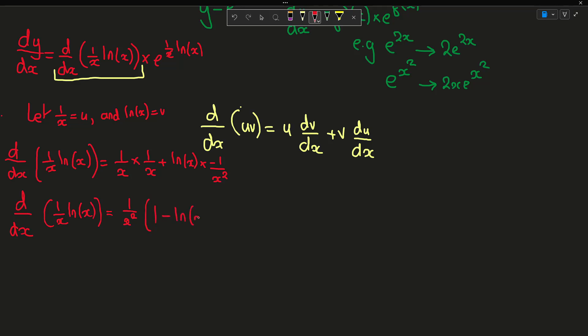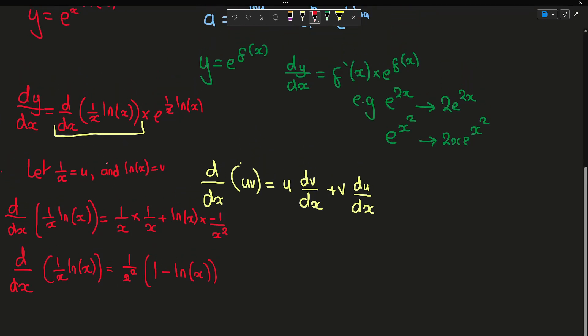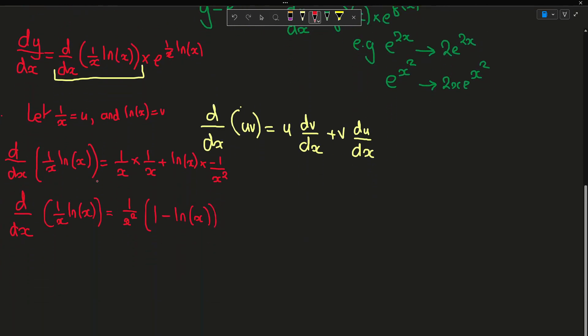d dx of 1 over x ln x is equal to 1 over x squared multiplied by 1 minus ln x. And now I'm going to resubstitute this into our original equation over here, so we're going to get dy by dx is equal to 1 over x squared of 1 minus ln x multiplied by e to the 1 over x ln x.